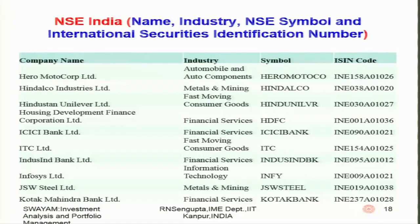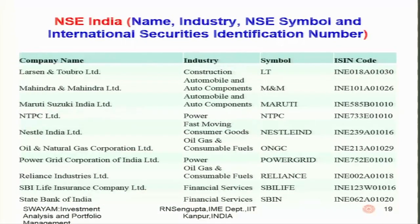In slide 18, the industries are more or less the same — financial services, FMCG, automobiles — and the companies include Hero MotoCorp, Hindalco, HUL, HDFC, ICICI Bank, ITC, IndusInd Bank, Infosys, JSW Steel, and Kotak Mahindra. Further companies include L&T, Mahindra & Mahindra, Maruti Suzuki, NTPC, Nestle, ONGC, Power Grid, Reliance, SBI Life Insurance, and SBI Bank.